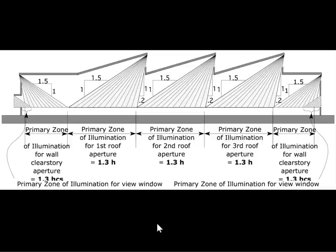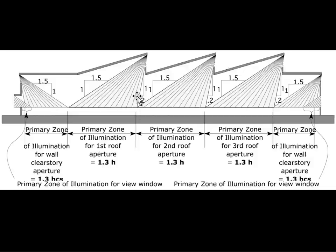Here's a superposition of a whole bunch of different elements happening in a building - this is a useful diagram to keep as a reference. There's a construction triangle showing the depth of the primary zone of influence from the view window, the construction representing the primary zone of illumination from the wall clerestory aperture, and multiple triangles representing the primary zone of illumination from the sawtooth - one, two, and three. On the north side there's no overhang so the construction triangle starts at the upper edge of the glass, while on the south side it starts at the outer edge of the overhang.